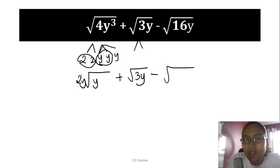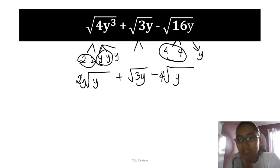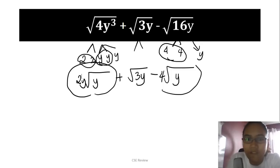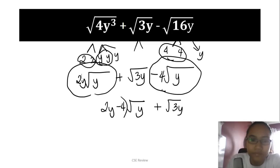So even without breaking it down further, since 4 is already two 2's, we extract the 4. The y has no pair, so it stays inside. Now our rule is to combine everything with the same last name. In this case, two have the same last name—both have √y as the last name. So we combine them: 2y minus 4 times √y plus √(3y). That's your answer.